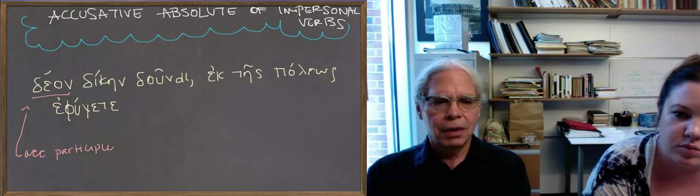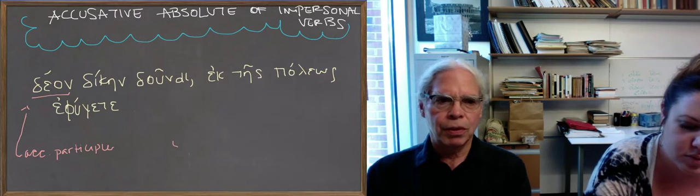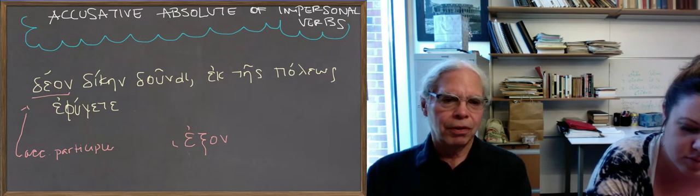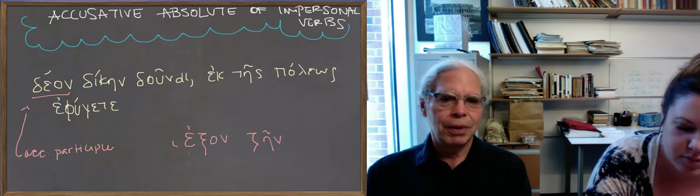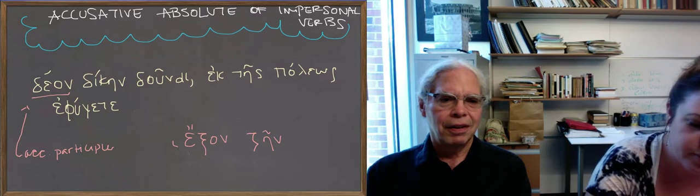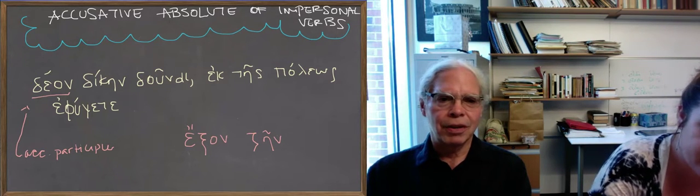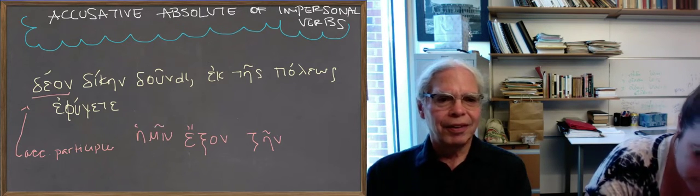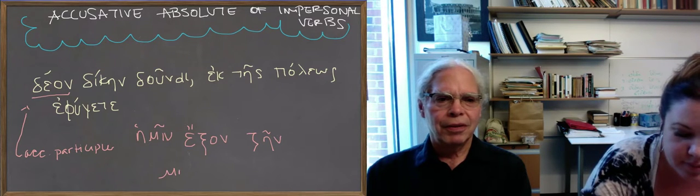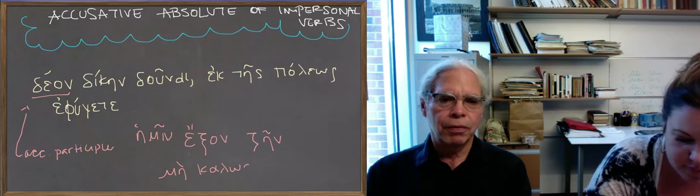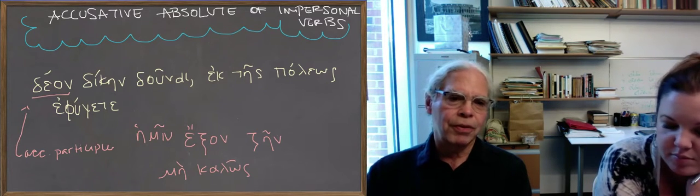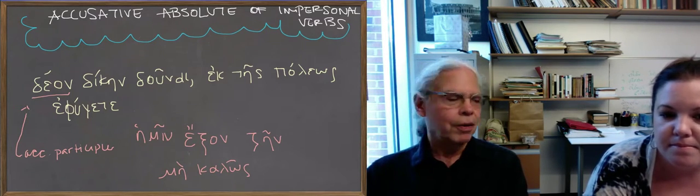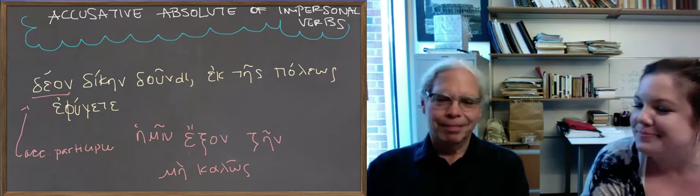ἔξον ζῆν, it being possible to live, there's a famous quote in the series, μὴ ἐξὸν ζῆν καλῶς, it not being possible for us to live well. So it means since it is not possible for us to live well, and the rest of it goes, καλῶς ἱερόμαθαν μᾶλαν τελευτᾶν, we choose instead to die well, you know, noble sentiment.